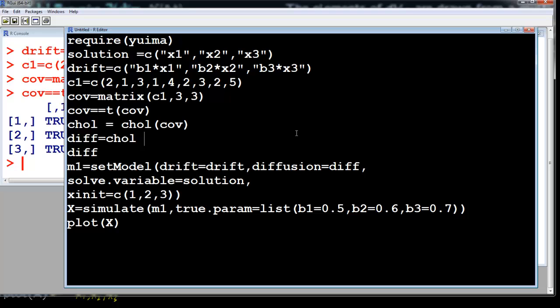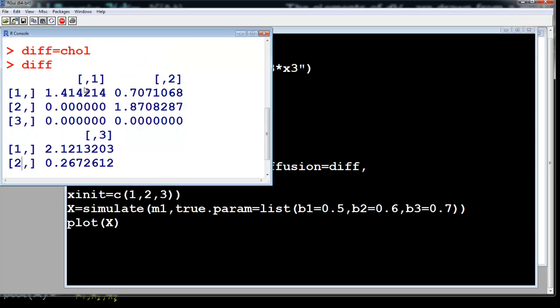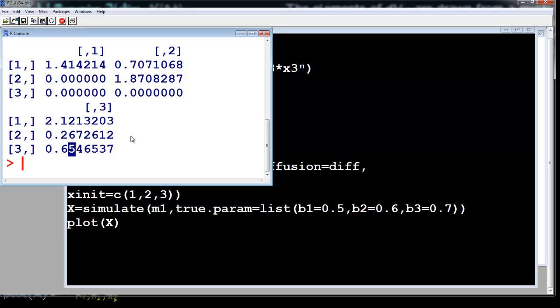More specifically, your matrix has to be positive definite. So now we do the Cholesky decomposition of the matrix. So we are going to set diff equals to Cholesky and we are going to see the matrix. So this is our matrix. The first column is 1.41, the second column is 0.7071 and 1.8, and the third column is this.